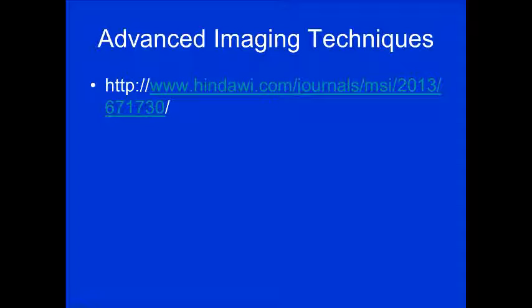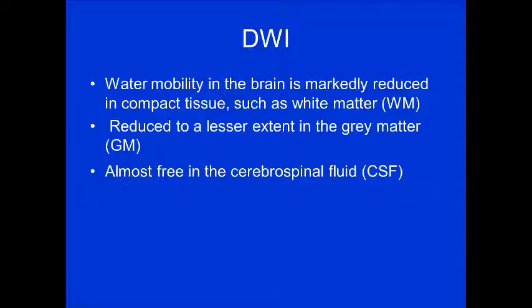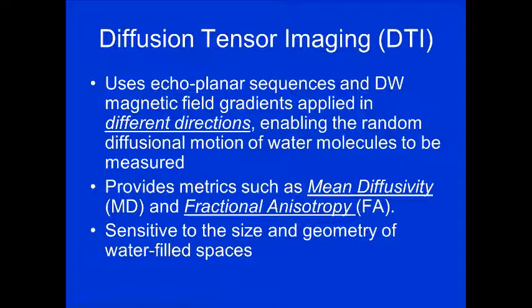Advanced imaging techniques for MS include diffusion-weighted imaging, or DWI, which highlights brain microstructure damage not visible on conventional imaging. It's based on measurement of water molecule motion — free water moves isotropically, but when restricted by tissues, it moves preferentially in certain directions, becoming anisotropic. Water mobility in the brain is markedly reduced in compact white matter, reduced to a lesser extent in gray matter, and almost free in CSF. This leads into diffusion tensor imaging, or DTI.